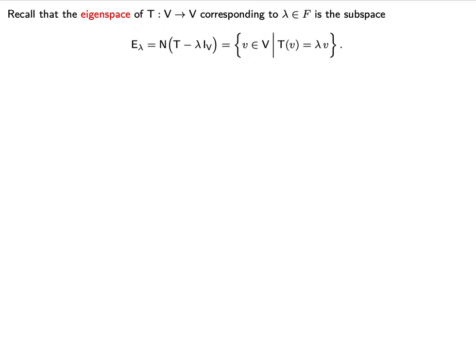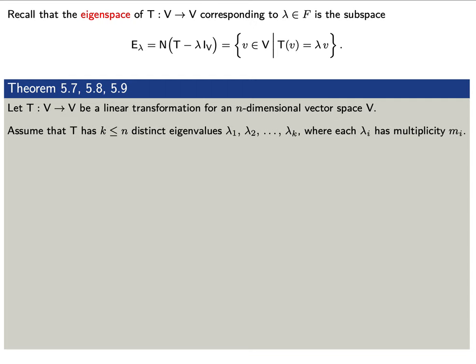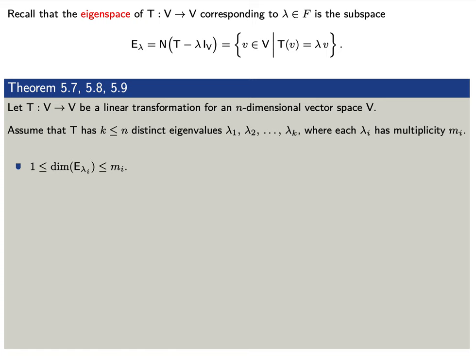We have a few properties about the eigenspace we'd like to state. Say that t is a linear transformation with k distinct eigenvalues lambda 1 through lambda sub k, and let m sub i denote the multiplicity of each eigenvalue. The dimension of the eigenspace E sub lambda i is between 1 and the multiplicity m sub i.